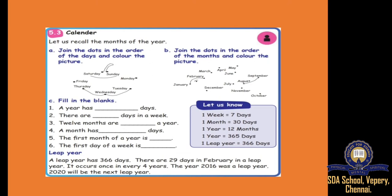We have seen the calendar and we learnt days and months. How many days are there? 7 days are there in a week. How many months are there in 1 year? 12 months. So, 1 week will have 7 days, 1 month will have 30 days, 1 year will have 12 months and 1 year will have 365 days.